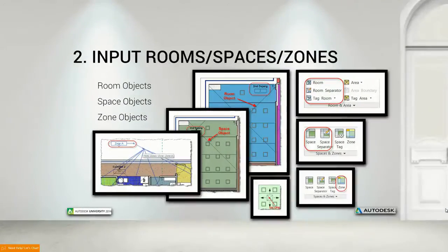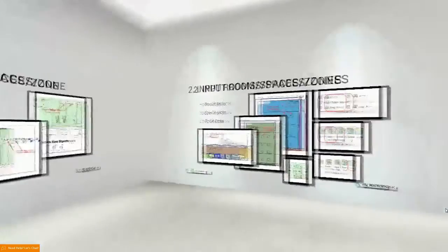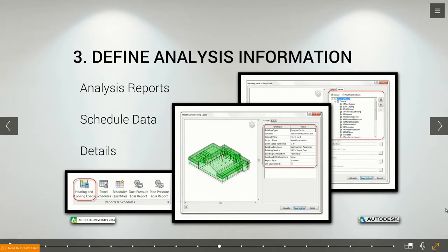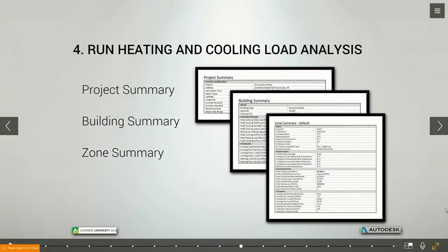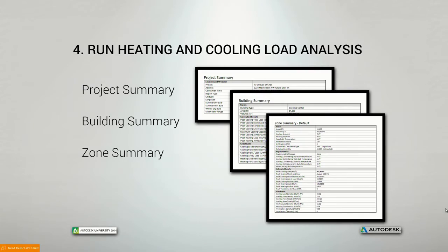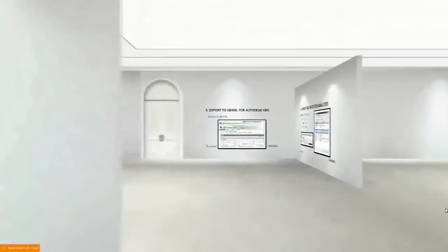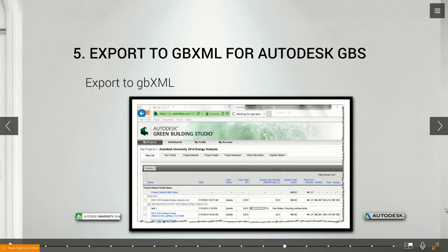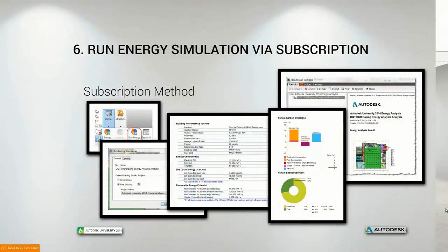We'll add rooms, spaces, and zones, and define some space limits as well. From there we'll run some analysis reports, schedule some data, show some details, run the heating load, do a building summary and zone summary. Then Zan will take it out — we'll export to GBXML, open it in Green Building Studio, run alternatives, and then talk about running energy simulation in the cloud.